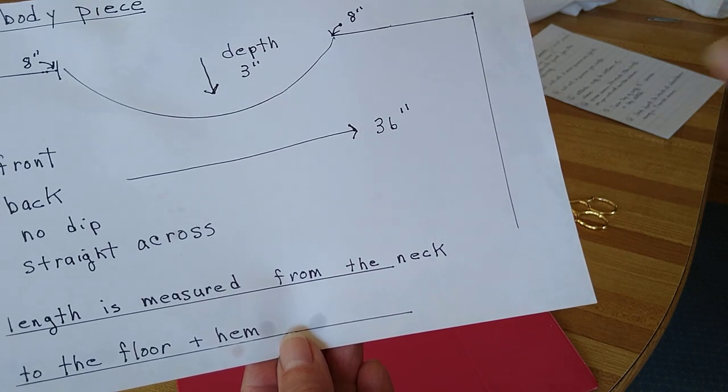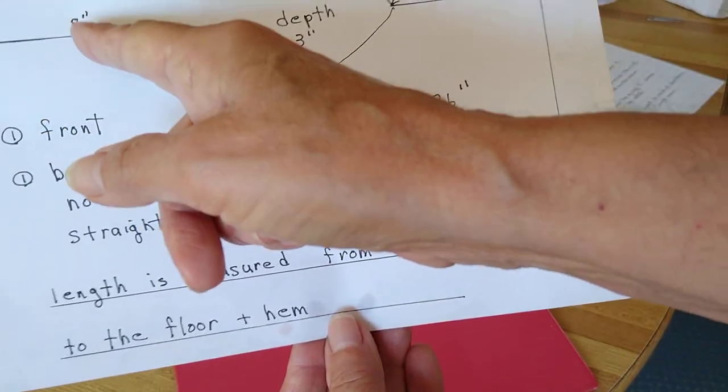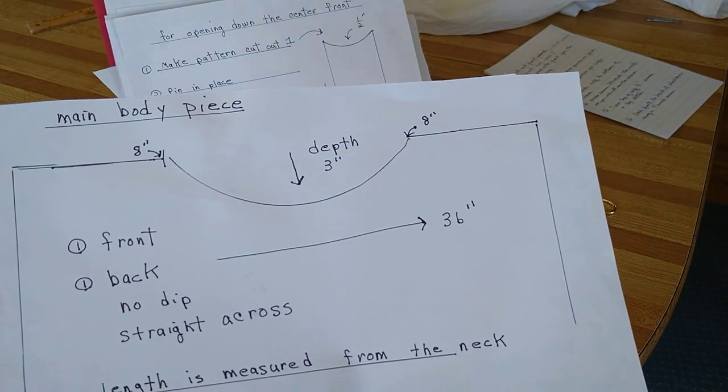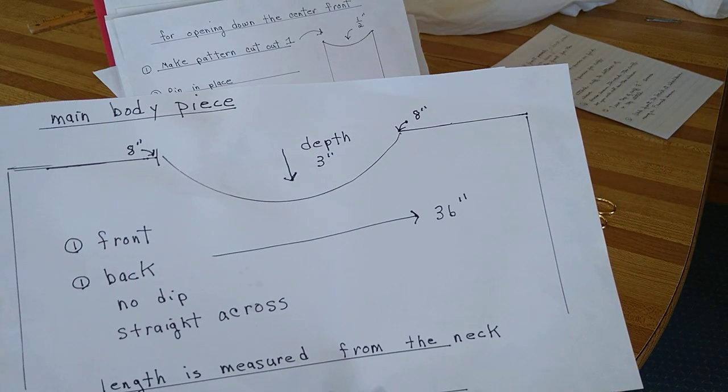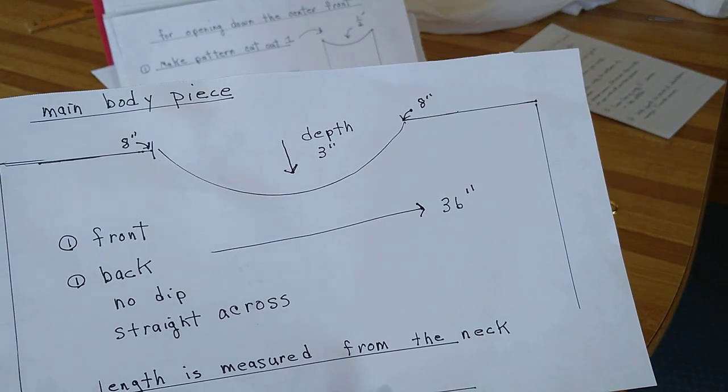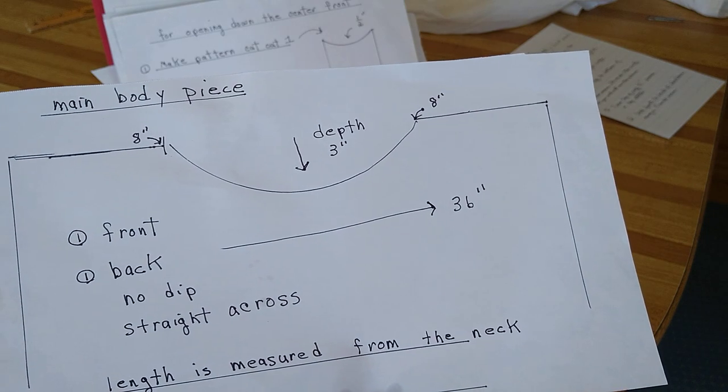I'd like you to mark it eight inches in on both pattern pieces because this will be the shoulder seams. The front piece will have a depth of three inches for the neckline, but the back will not.